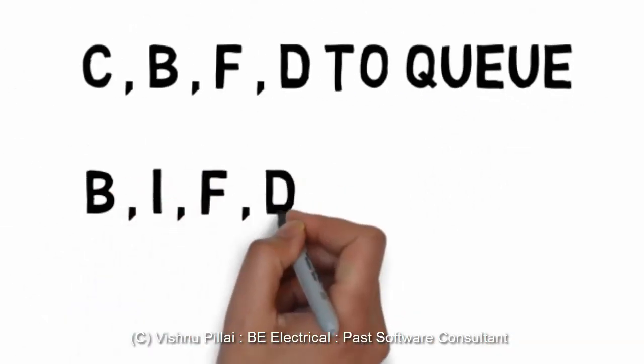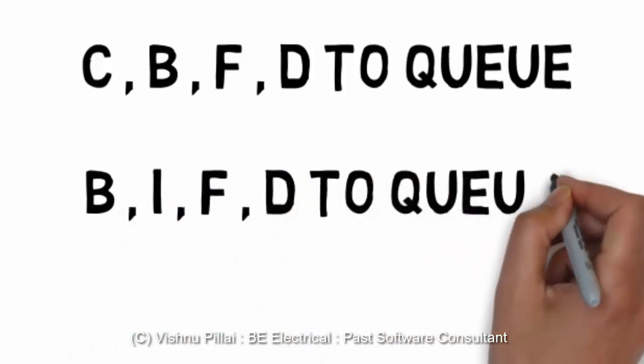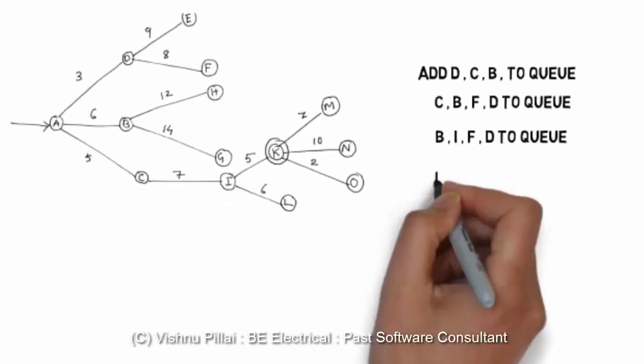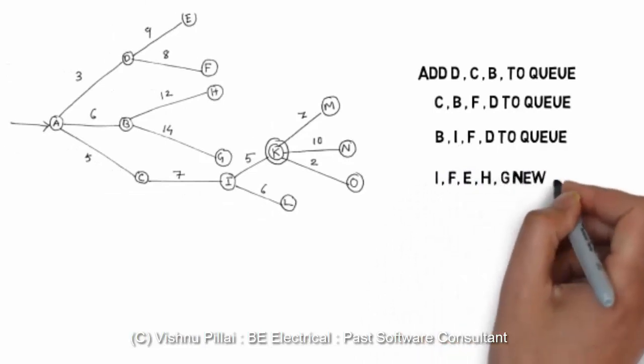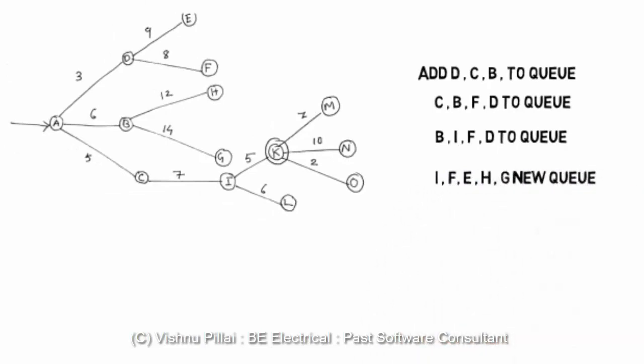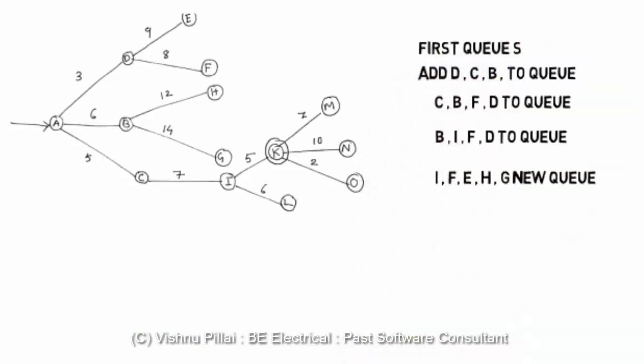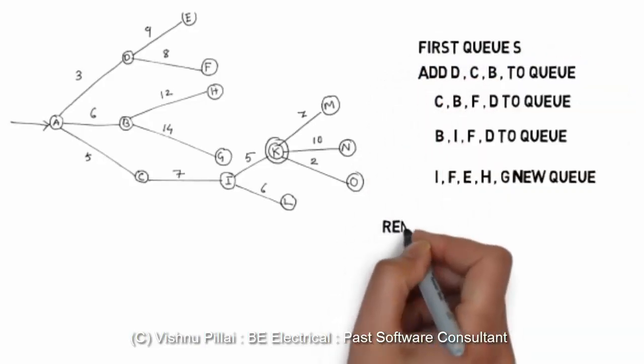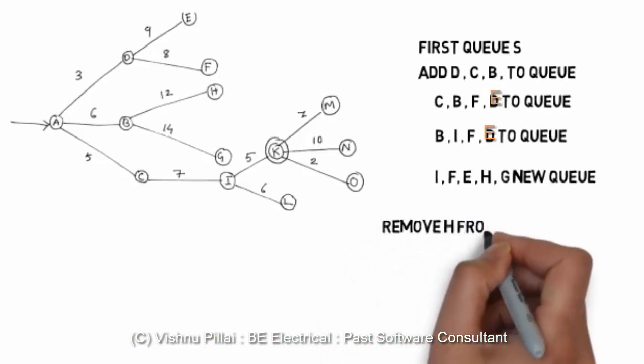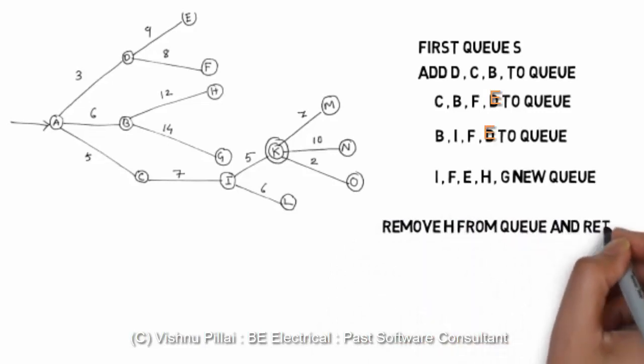When we look into the working of this graph using best first search method, first we will start at A and we will add D, C, B to the queue based on the cost associated with each path. For A to D the cost is 3 so we will add D first, then we will add C and B.